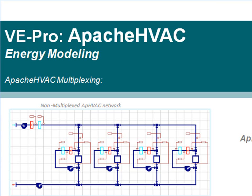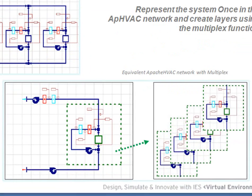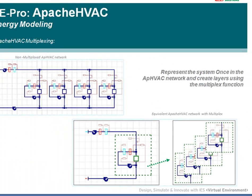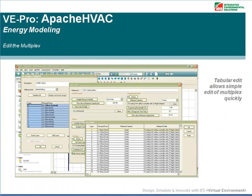This leads to very large networks that are a nightmare to edit. With the multiplexing feature, this is all avoided. Looking at the bottom image of the slide, you can represent the common outside air system and create one fan coil unit representation in the network. This fan coil unit can then be multiplexed, with the system layered so that there are multiple layers — four in this case — representing each of the four zones and systems. You can easily edit the inputs for the layers in your multiplex using the tabular edit function, which allows you to select multiple layers and variables to edit at one time. You can also copy and paste the inputs directly from Excel.